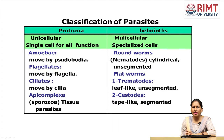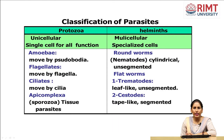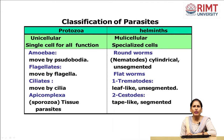Here is the classification of parasites. They are divided into protozoa and helminths. Protozoa are subdivided into amoebae, flagellates, ciliates, and Apicomplexa (sporozoa). Amoebae move by pseudopodia; flagellates have flagella for locomotion; ciliates have cilia — hair-like structures on the cell wall used for movement. Helminths are multicellular organisms divided into nematodes, trematodes, and cestodes.